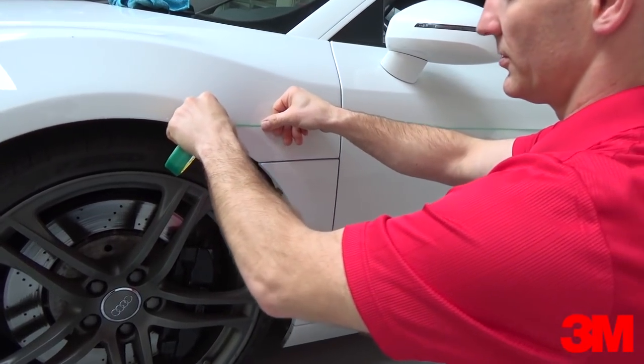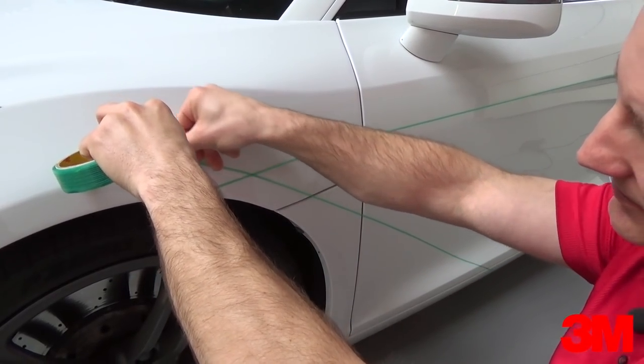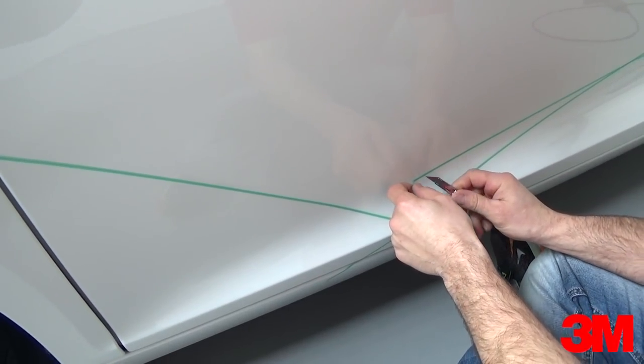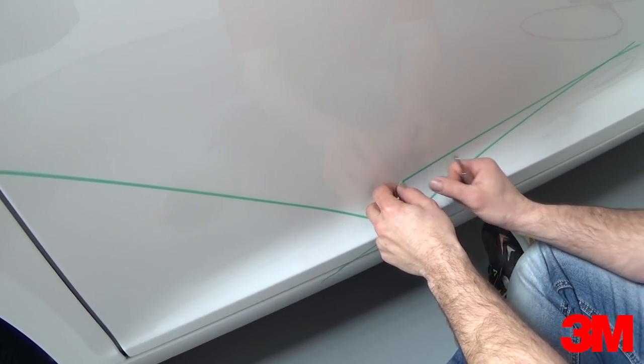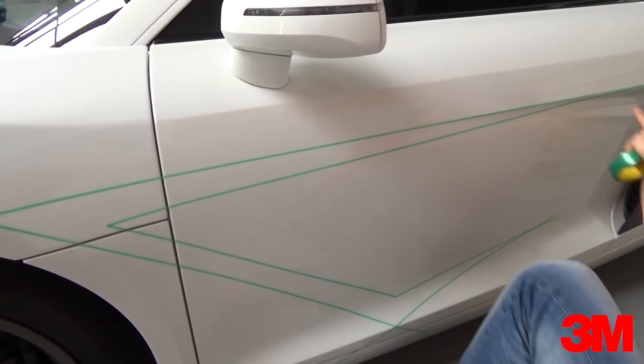Normally when installers try to create a custom design using standard knifeless tape techniques they create overlapping layers. For the outside area this is not so much of a problem, but for the inside lines the edges have to be cut precisely to ensure a uniform corner. This takes time and runs the risk of cutting the paint.